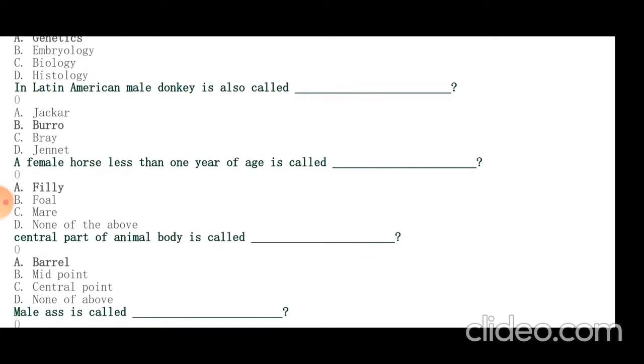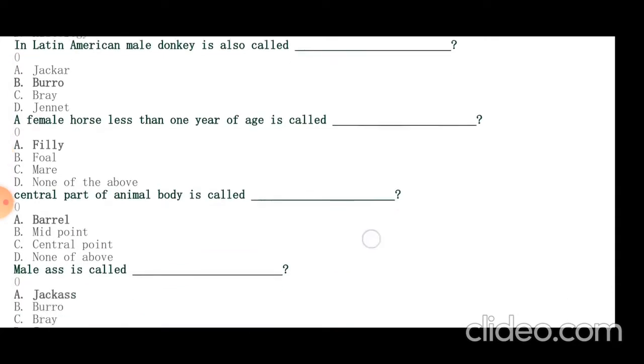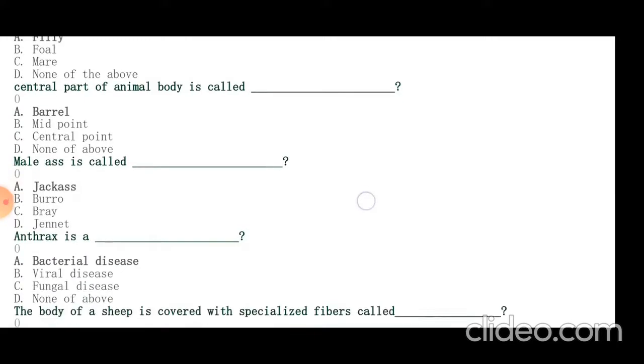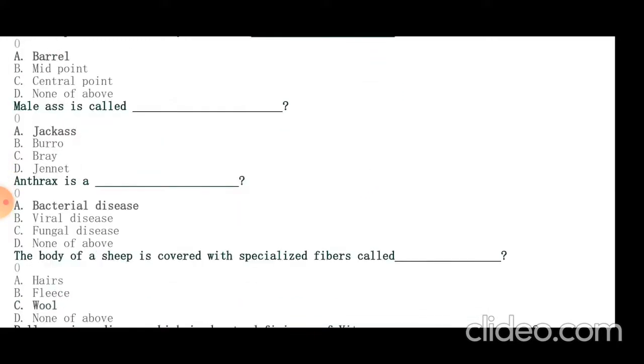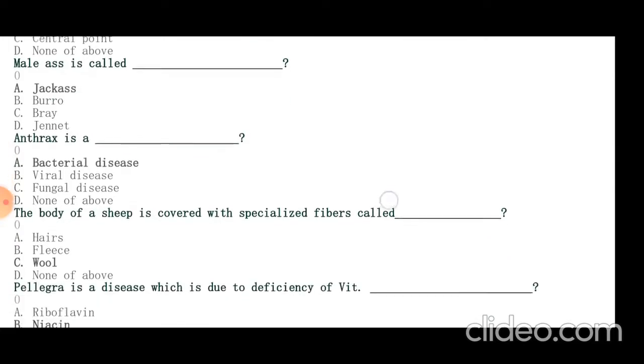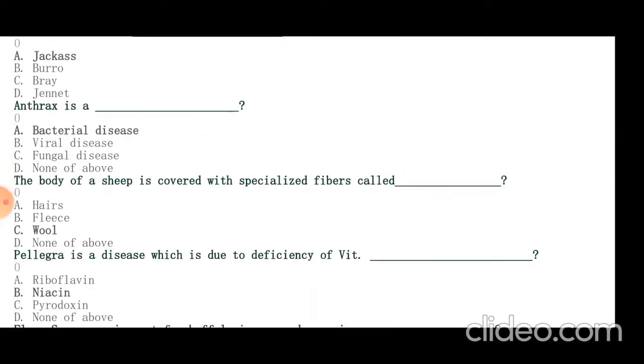Central part of animal body is called barrel. Male ass is called jackass. Anthrax is a bacterial disease. The body of a sheep is covered with specialized fibers called wool. Pellagra is a disease due to deficiency of vitamin niacin.